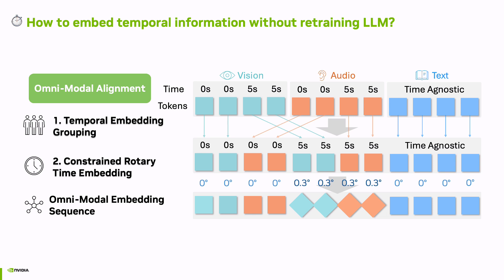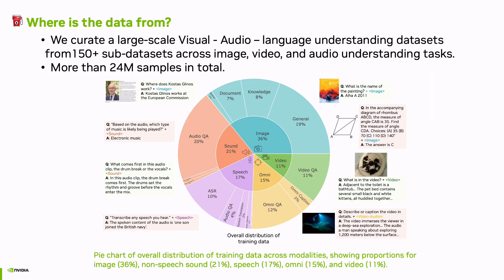we propose two methods. The first is temporal embedding grouping. We further introduce constrained rotary time embedding, which incorporates absolute timestamp information directly into the multimodal embeddings, providing the model with a stronger sense of temporal structure.